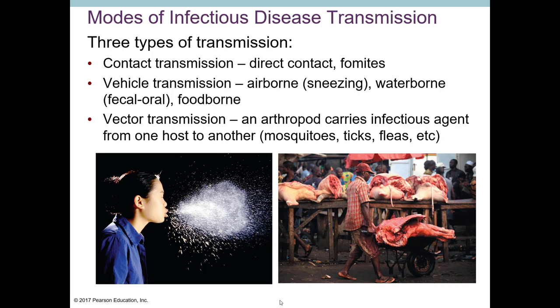Vectors are usually an animal — an arthropod — that carries an infectious agent from one individual to another through a bite. The agent is in the saliva of that arthropod, or it's in the blood already in its body from the other person. When it bites you, it delivers the agent directly and creates a portal of entry simultaneously — so it doesn't just contaminate you, it actually gets the pathogen into your body.